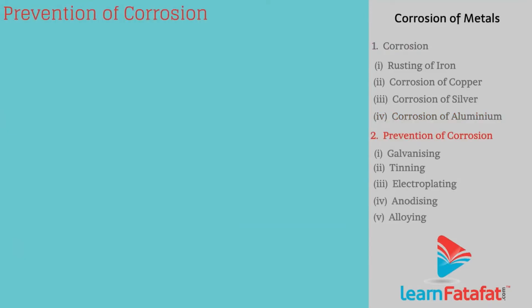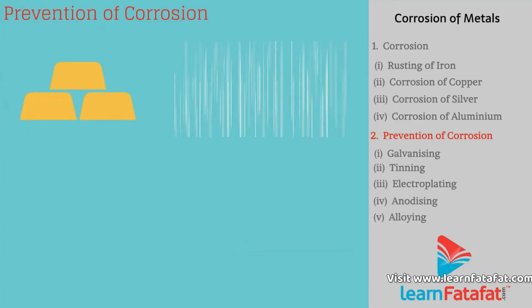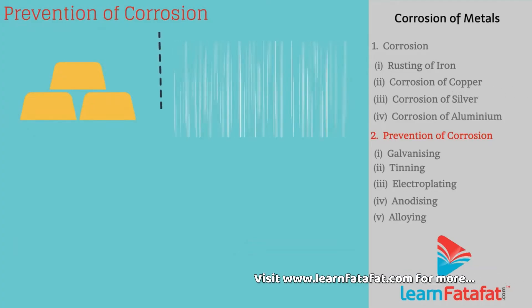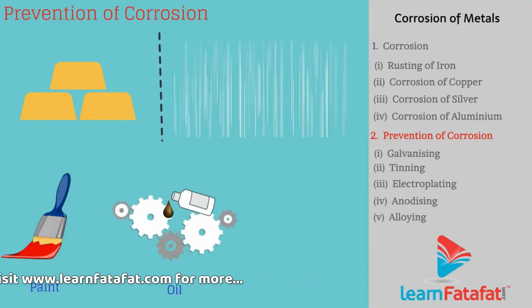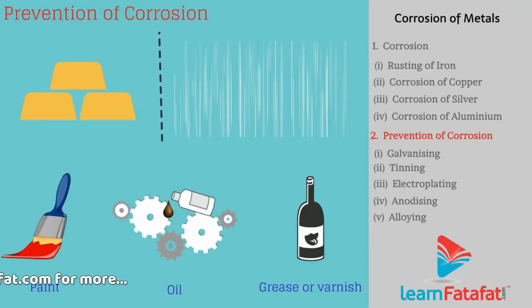Prevention of corrosion. Corrosion can be prevented if the contact between metal and air is cut off. For example, coating metals with paint, oil, grease or varnish prevents corrosion temporarily.